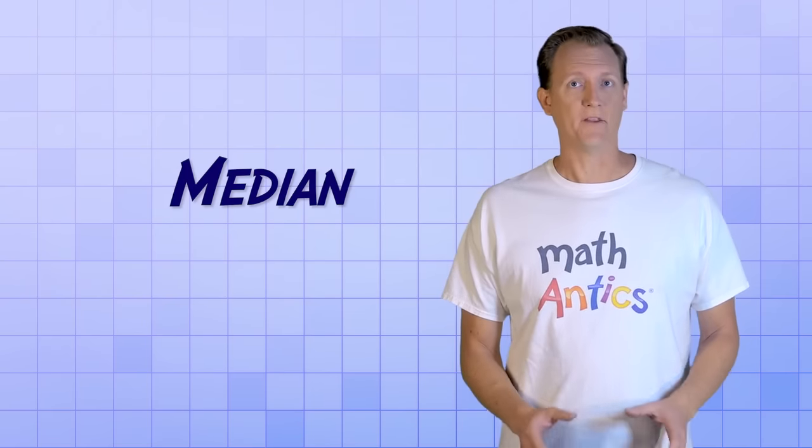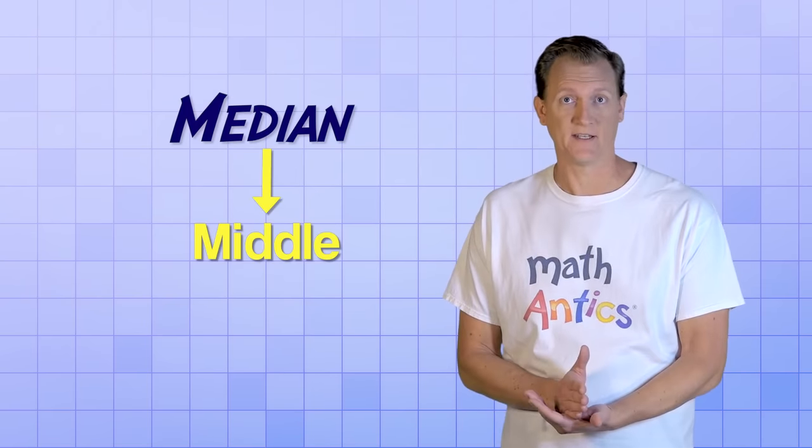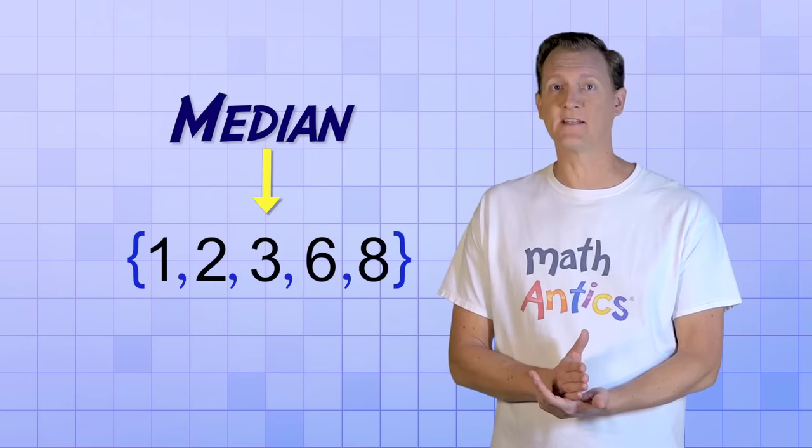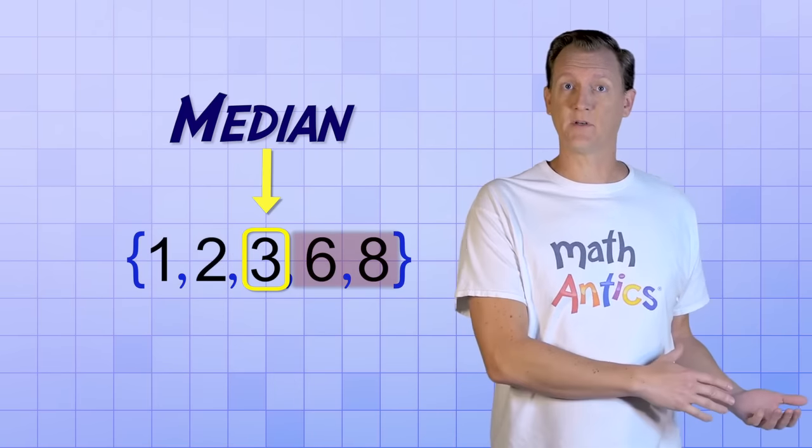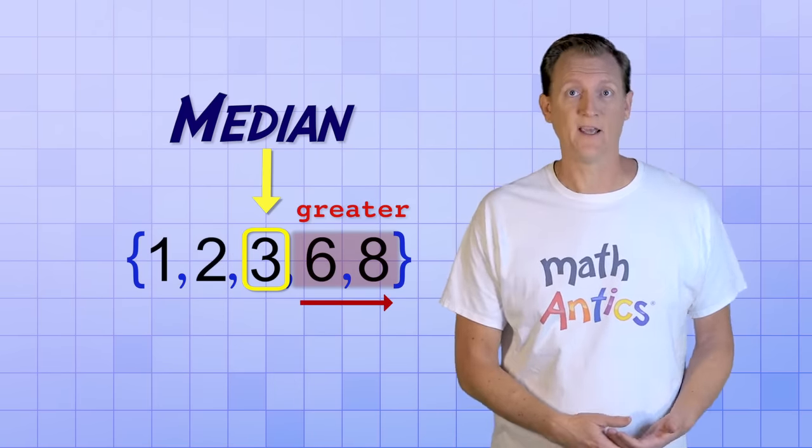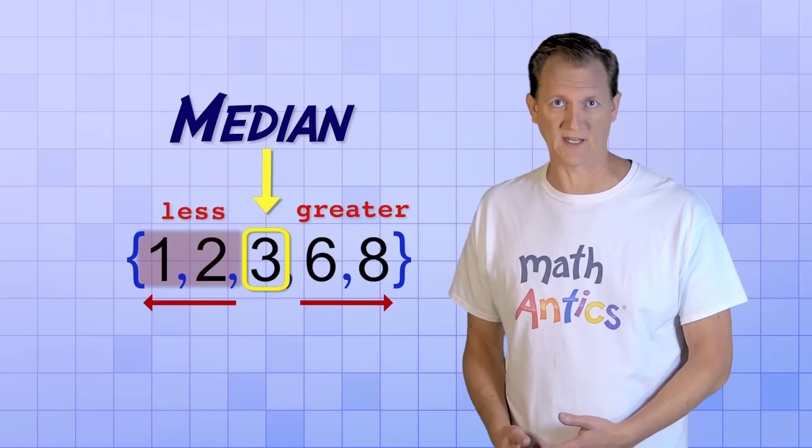Now what about the median? The median is the middle of a dataset. It's the number that splits the dataset into two equally sized groups or halves. One half contains members that are greater than or equal to the median, and the other half contains members that are less than or equal to the median.